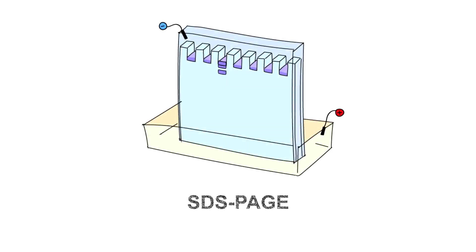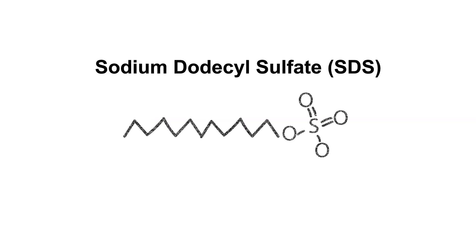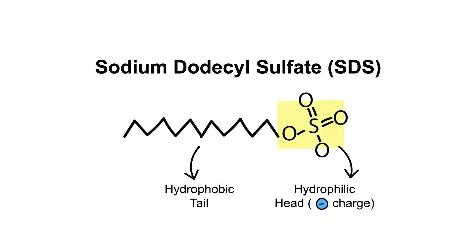Today, we're excited to teach you a little bit about how SDS is used to run protein gels. Sodium dodecyl sulfate, or simply SDS, is a strong detergent that has a long hydrophobic tail and a polar head that carries a negative charge.